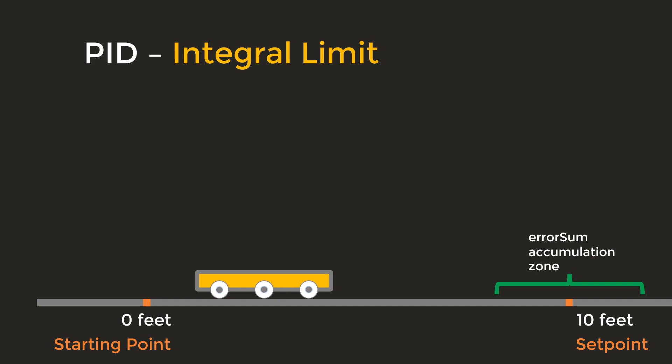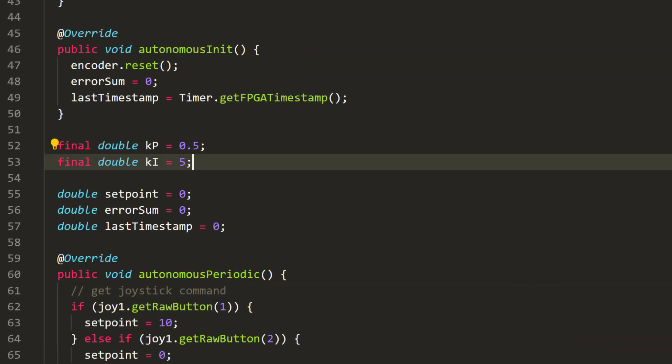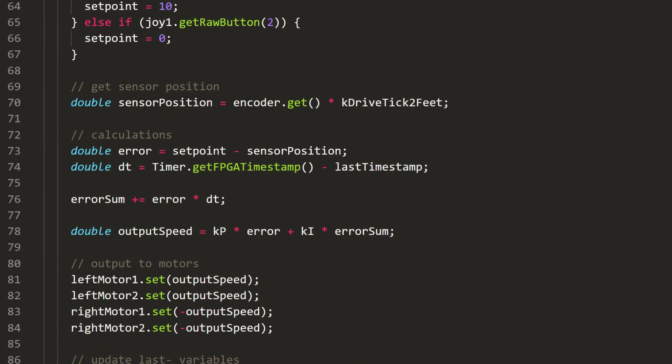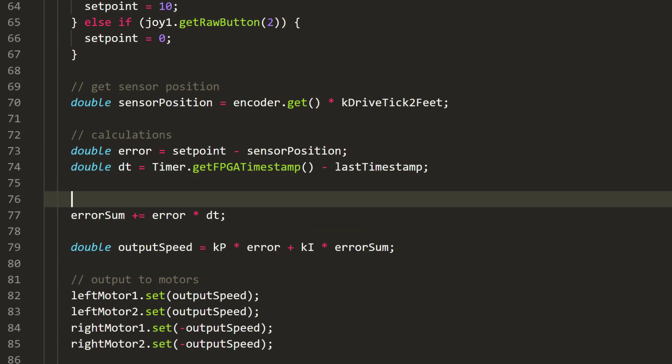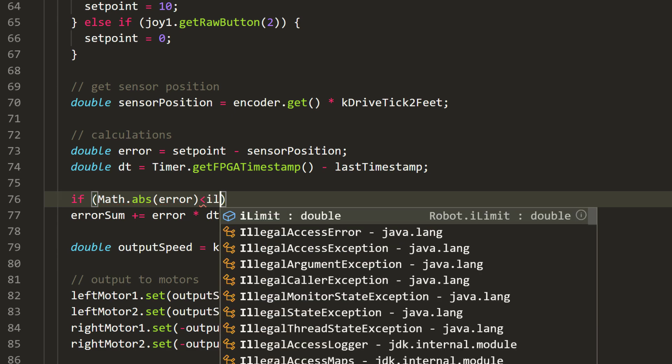One way to improve this problem is to only accumulate the error sum in a zone near the setpoint. This way, only the small errors will be added and will thus keep the error sum small. To implement this in the code, we will first create a variable to store the radius of the zone. Then, add an if statement around the accumulation of error sum. Only if the robot is close to the setpoint will we add to the error sum. The robot is in the zone when the absolute value of error is less than the zone radius.